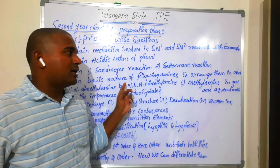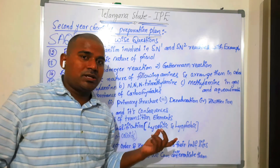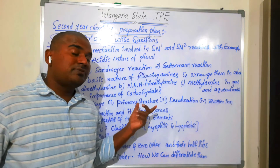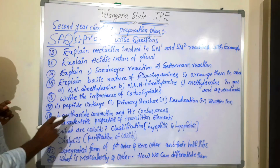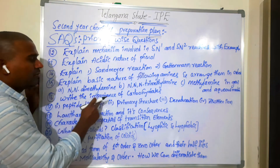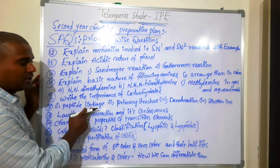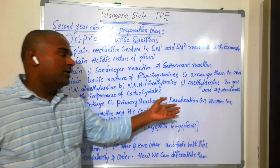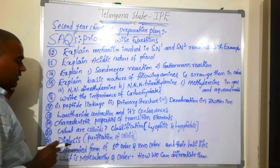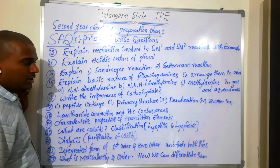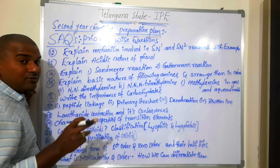Write the importance of carbohydrates — biomolecules. Peptide linkage, primary structure of protein, denaturation of protein, zwitterion — all important. Lanthanide contraction from D and F block and its consequences. Characteristic properties of transition elements. What are colloids and classification of colloids — lyophilic and lyophobic?